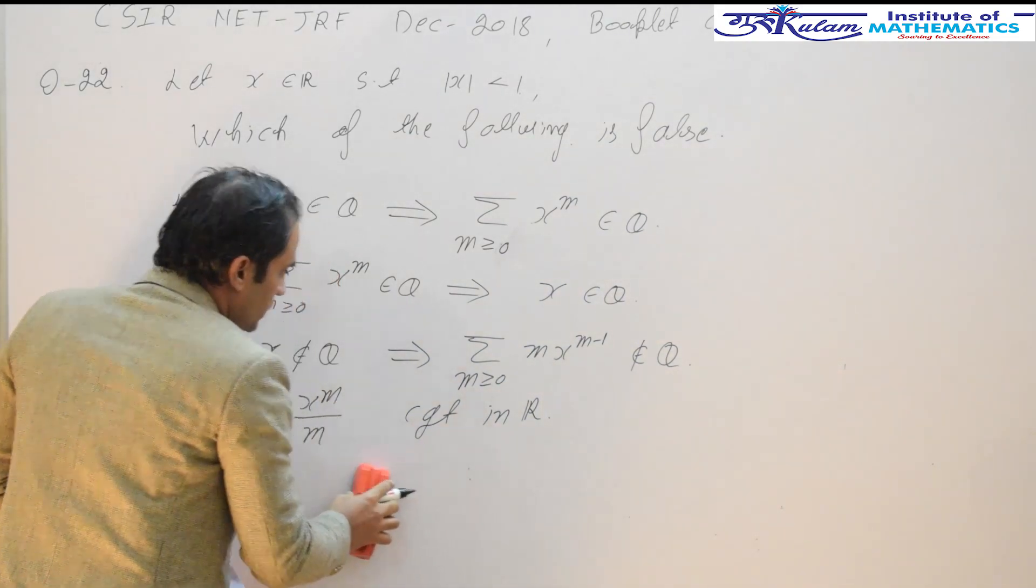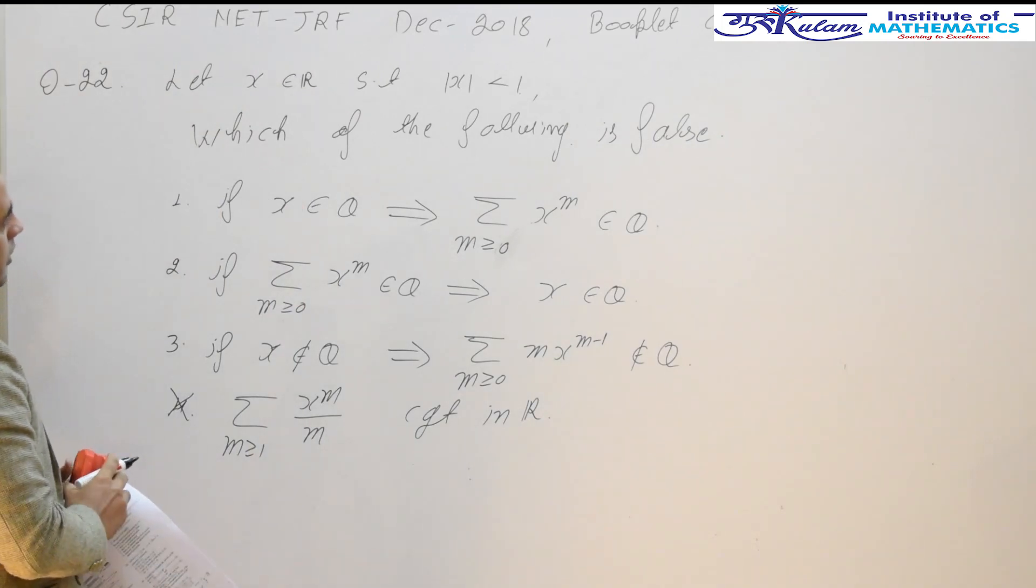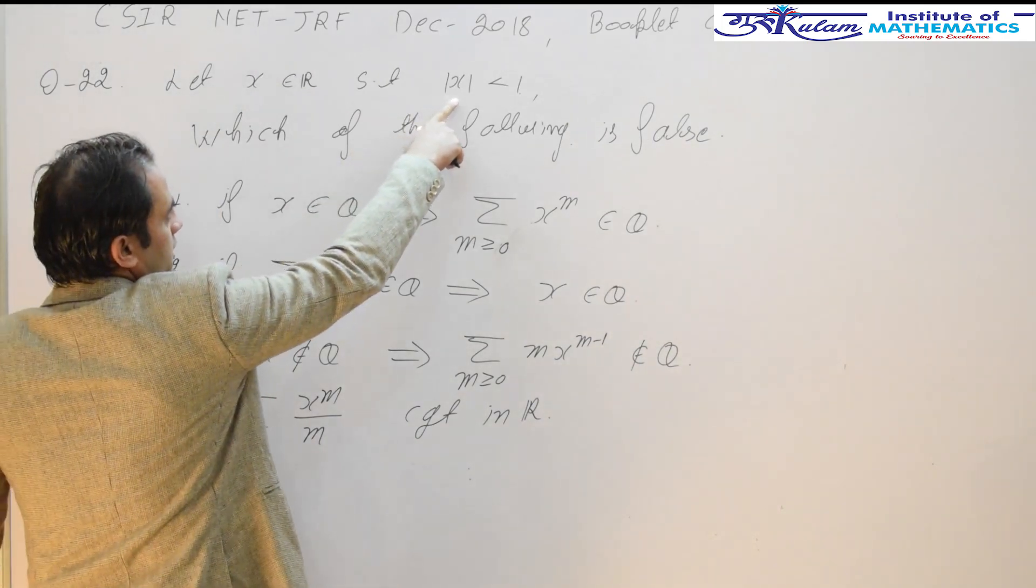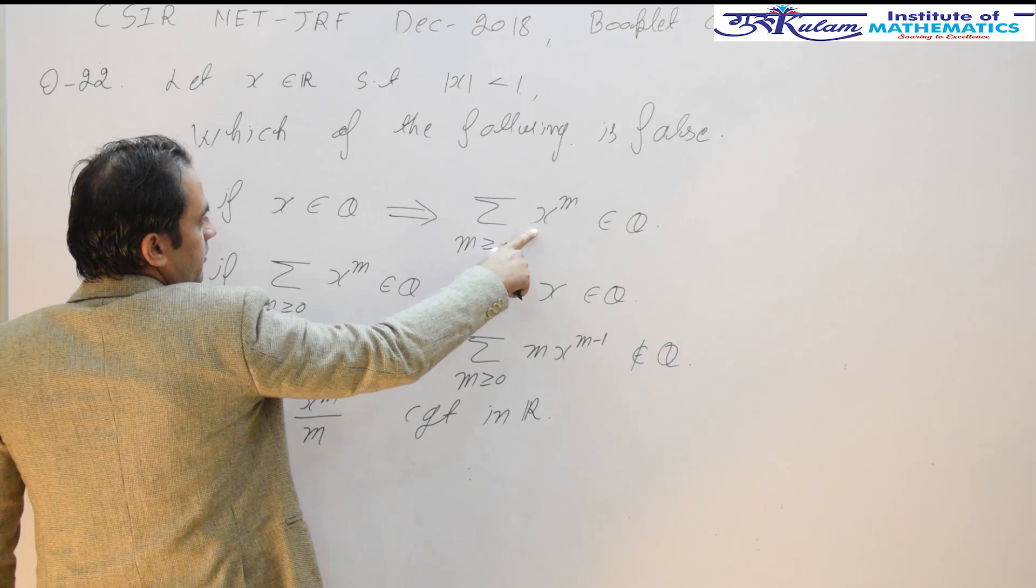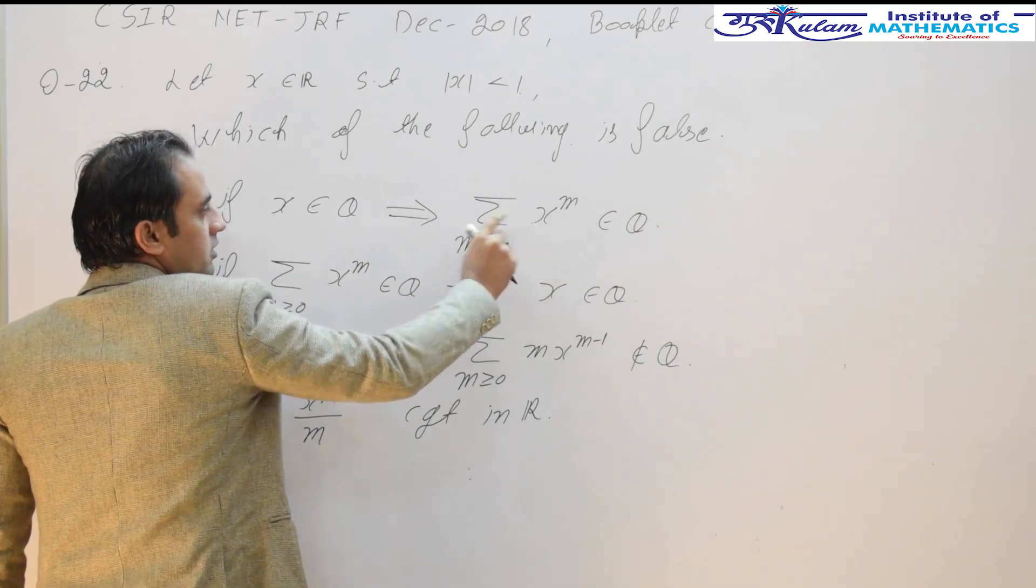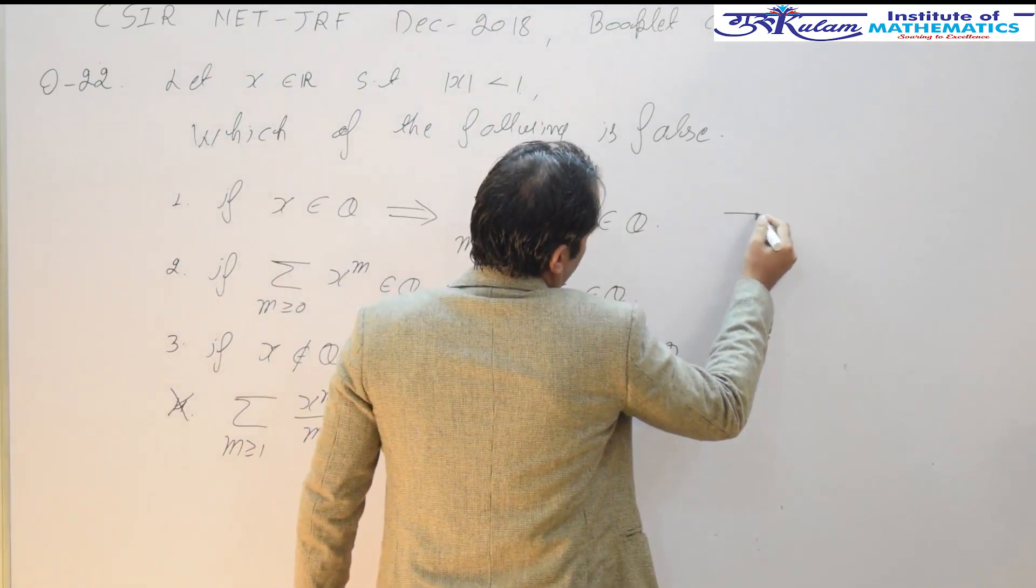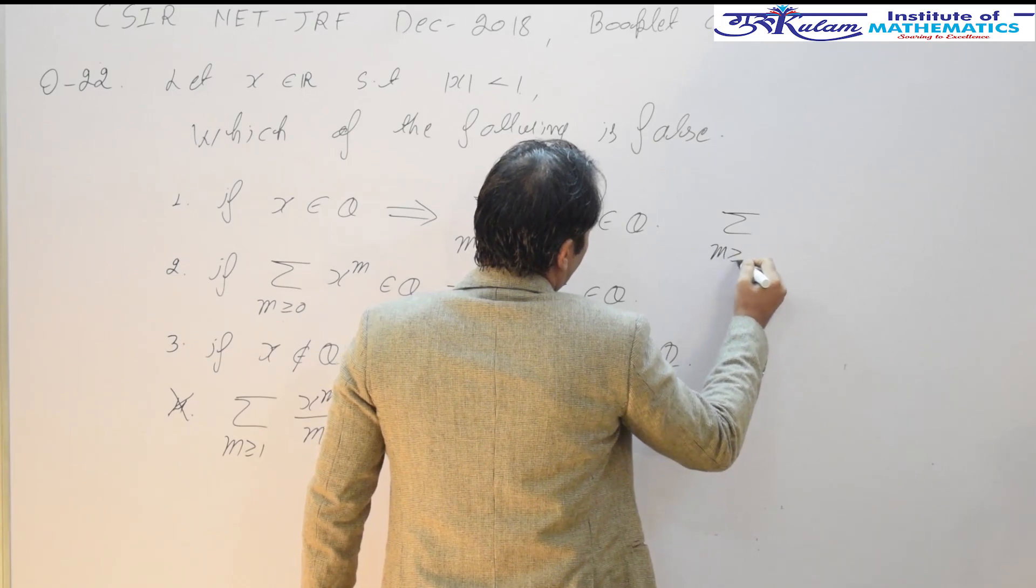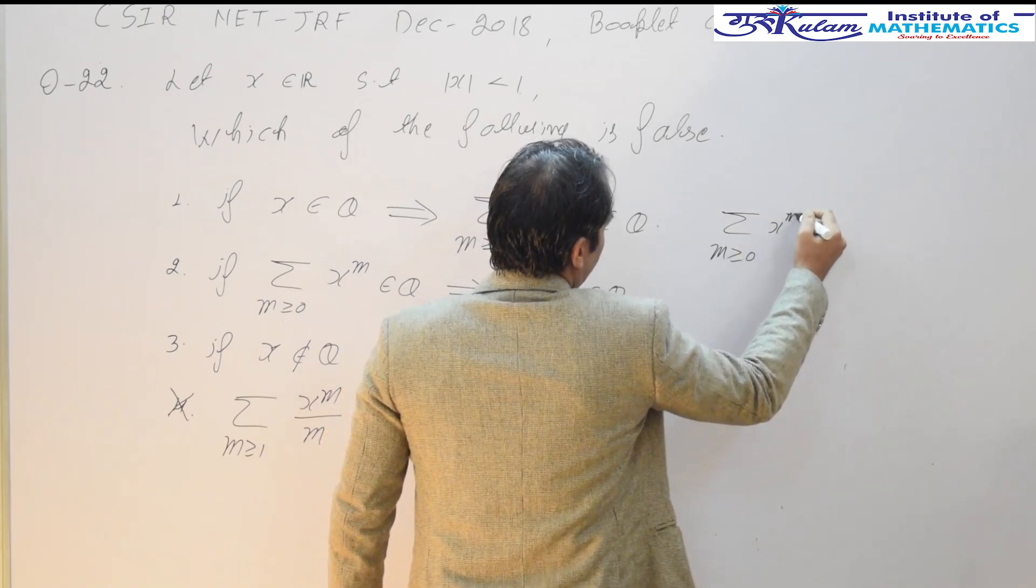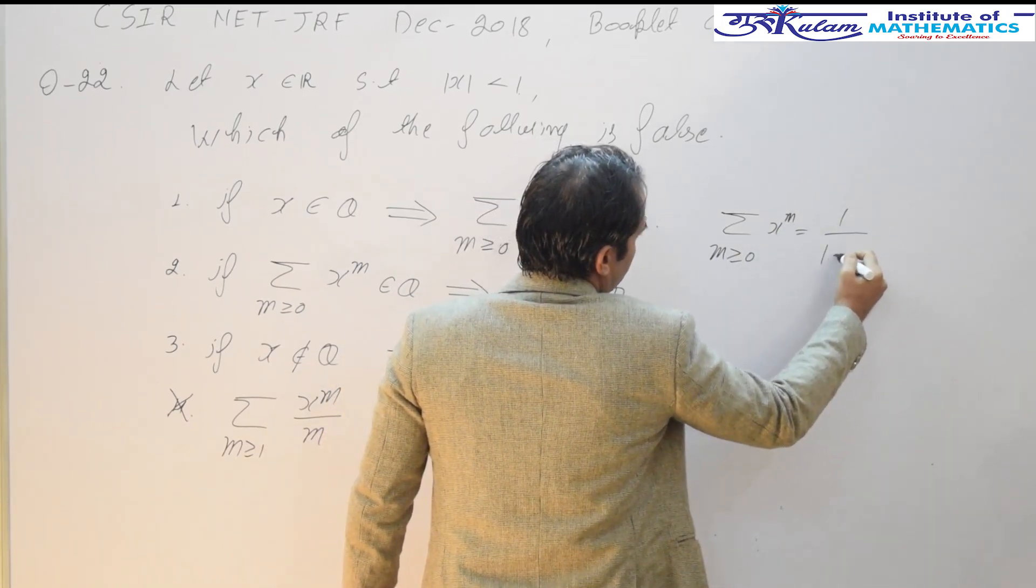Again, let's check the third option. Since mod of x is less than 1, this series is a geometric series and its sum is summation m greater than or equal to 0, x to the power m, which is simply 1 upon 1 minus x.